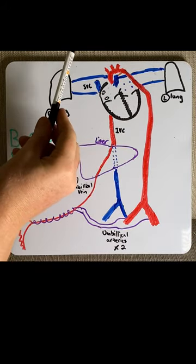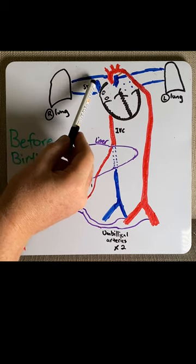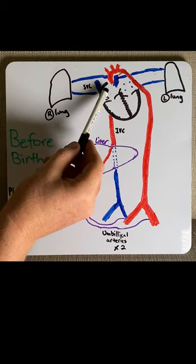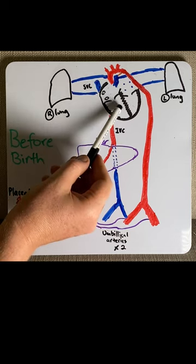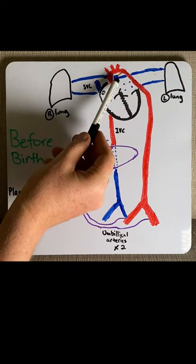Blood that drains the head and arms of the fetus comes in via the superior vena cava and enters the right atria. This blood then goes down to the right ventricle and exits the pulmonary trunk to go to the lungs.